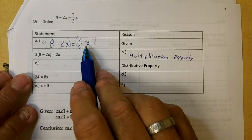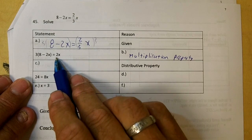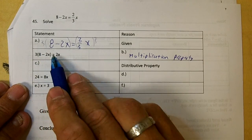You multiply both sides by 3. The 3s cancel out, leave you 2x, and you got 3 times 8 minus 2x.